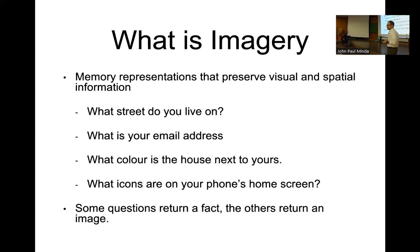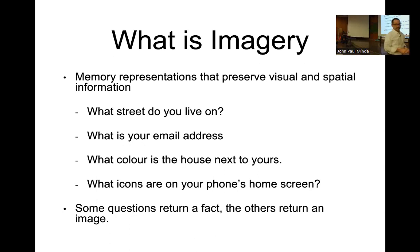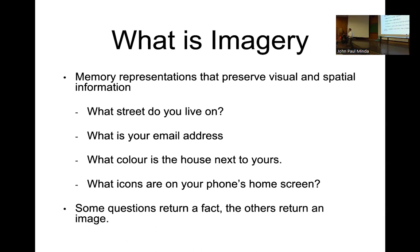If I ask what street you live on, you just retrieve that as a semantic memory — you don't need to imagine it. Same with your email address. But if I ask what color is the house next to the house you grew up in, you probably have to imagine yourself standing on the street in front of your house and looking at the house next to it. You can't answer that specifically with a language-based fact; you have to answer it by imagining something.